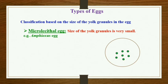Microlecithal eggs: when the size of the yolk granule is very small, such eggs are considered microlecithal eggs. The best example is the amphioxus egg, which is a microlecithal egg.